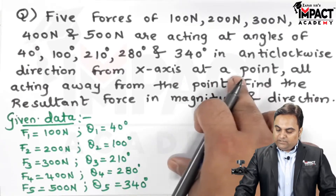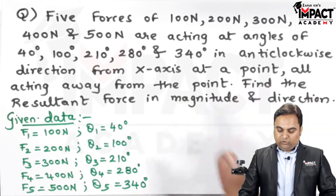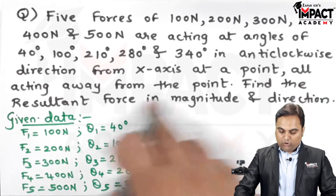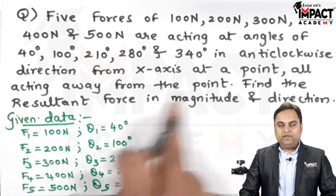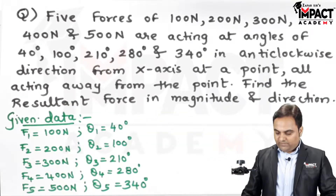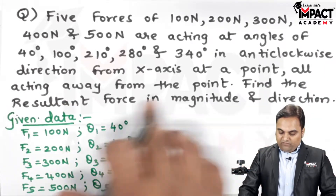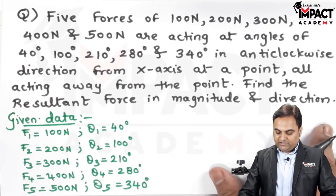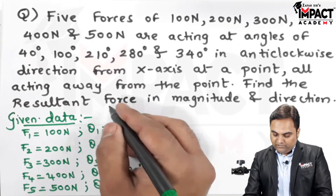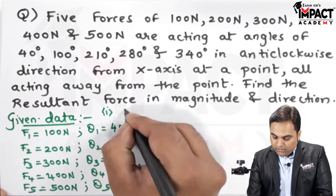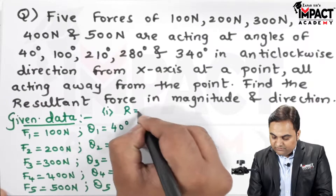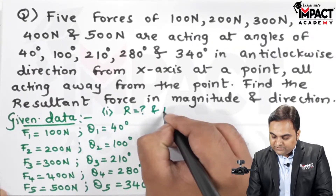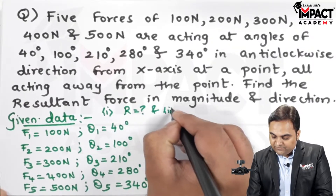All forces are acting at a single point and away from the point, which means it is a pull-type (tensile) concurrent force system. We need to find the resultant force in magnitude and direction — that is, the value of R and θ.